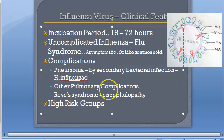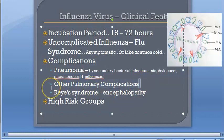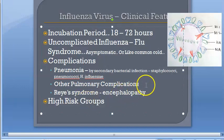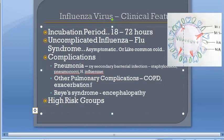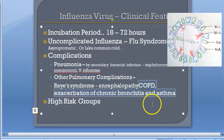So the secondary bacteria causing pneumonia are staphylococci, pneumococci, and Haemophilus influenzae. Other pulmonary complications include COPD exacerbation, exacerbation of chronic bronchitis, and exacerbation of asthma.